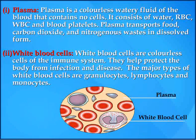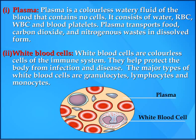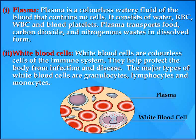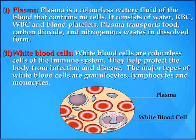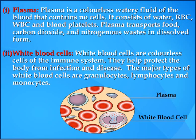2. White blood cells. White blood cells are colorless cells of the immune system. They help protect the body from infection and disease. The major types of white blood cells are granulocytes, lymphocytes, and monocytes.